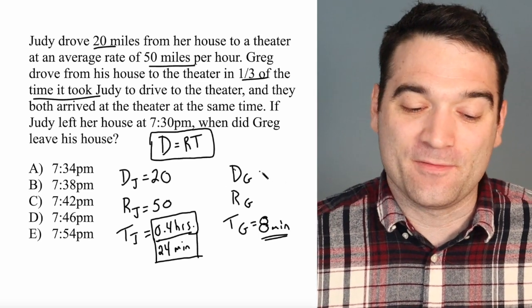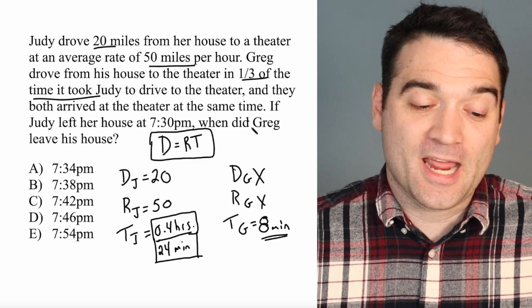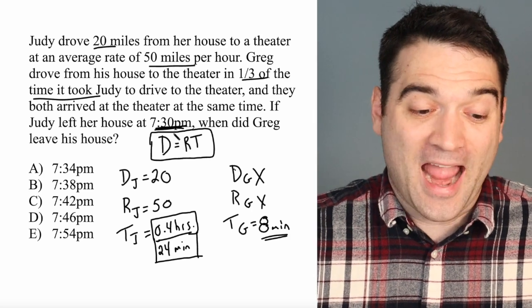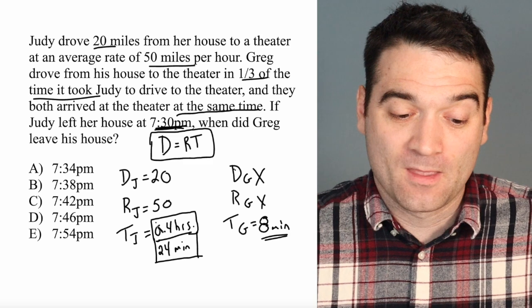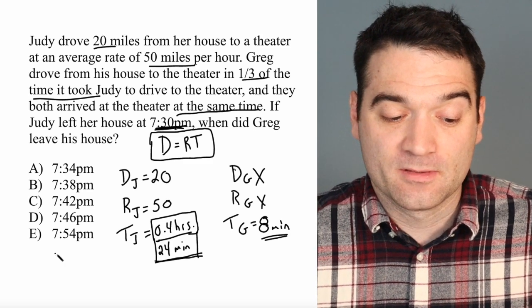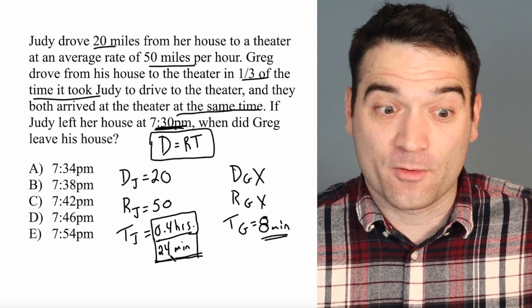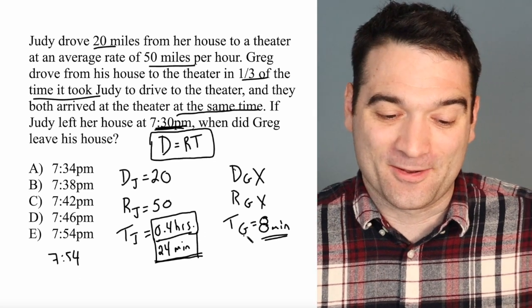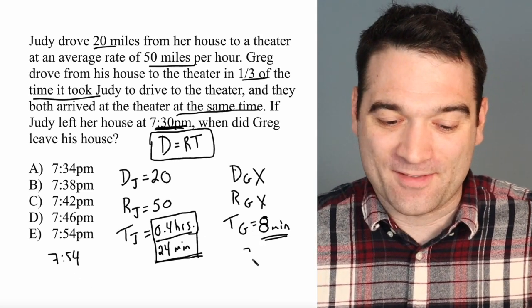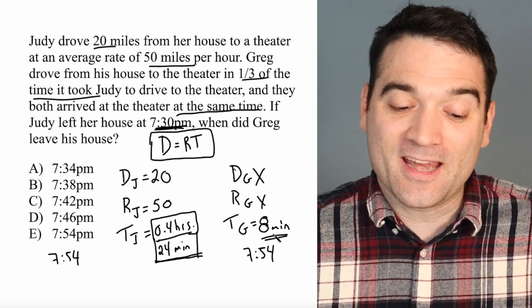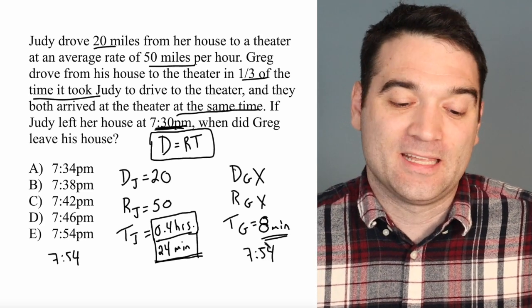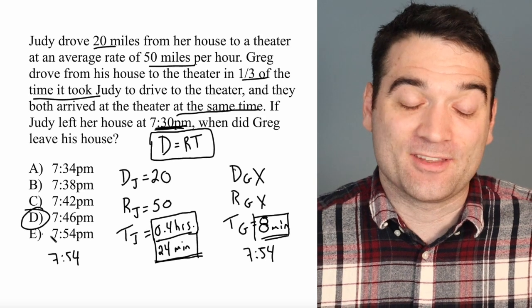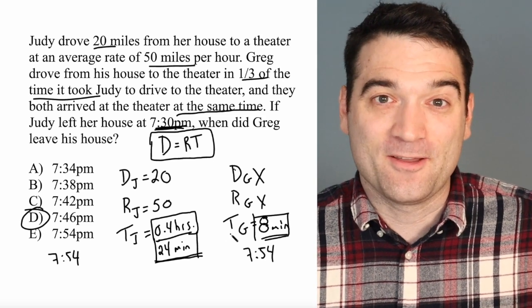Now we can start putting everything together. We don't even need to worry about Greg's distance or rate, because the question asks: if Judy left her house at 7:30 and they arrived at the theater at the same time, we can say she left at 7:30 and arrived 24 minutes later — so she arrived at 7:54. That's when Judy arrived at the theater. Greg also arrived at the theater at 7:54, meaning he left eight minutes before that. Eight minutes before 7:54 is 7:46. Greg left his house at 7:46 p.m.